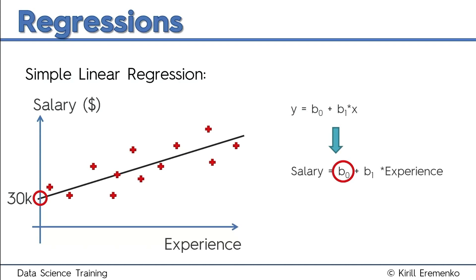Now, what is b1? b1 is the slope of the line. The steeper the line, the more money you get per extra year of experience. For example, if somebody went from four to five years of experience, you project onto the line and then onto the salary axis, and you can see that for one year of experience the person gets an extra $10,000 on top of their salary. If the coefficient b1 is less, the slope will be less, meaning less salary increase per year of experience. If the slope is greater, the experience yields a larger increase in salary.